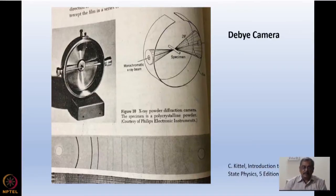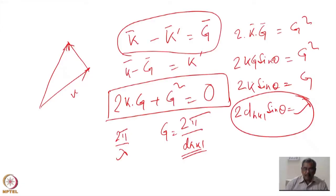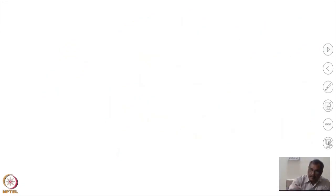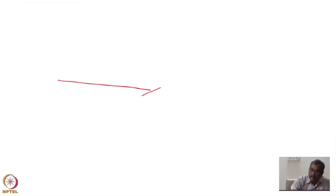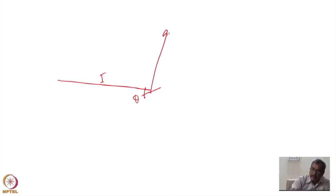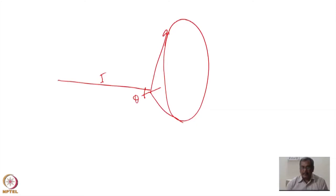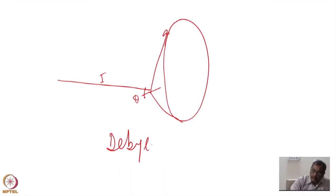Now, instead of a single crystal, imagine the Ewald construction for a powder crystal. If one crystallite satisfies the condition in one direction, there will be other crystallites having the same θ but a different azimuthal angle, so it is equivalent to rotating the crystal around the incident beam. The reflected beam will describe a circle in reciprocal space. These are perfect powder crystals which will have what is known as a Debye-Scherrer cone.